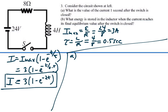So for part A, we have that at t equal to 1 second, our current is equal to 3 times 1 minus e to the negative 2 times 1.